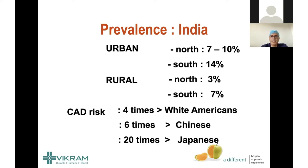We don't have nationwide data, but a few studies give us an idea. Urban areas have more prevalence of this disease, while rural areas have less — though rural areas are also catching up. There is not much difference between north and south India based on available studies.